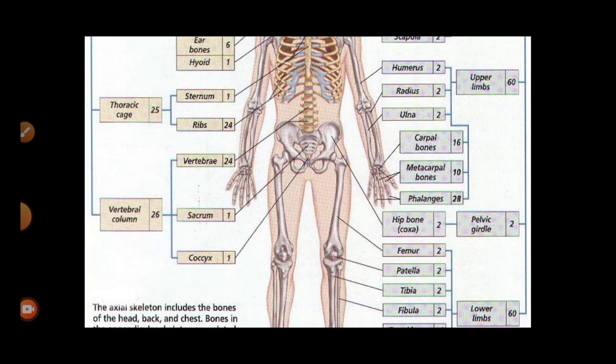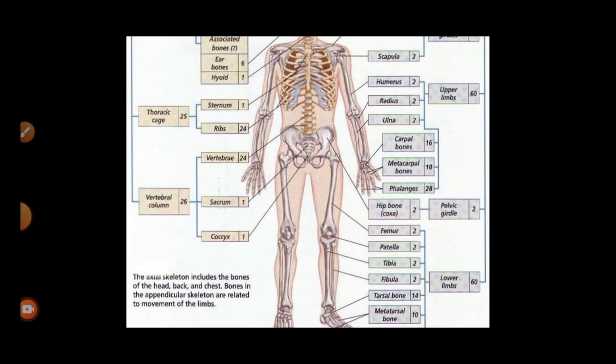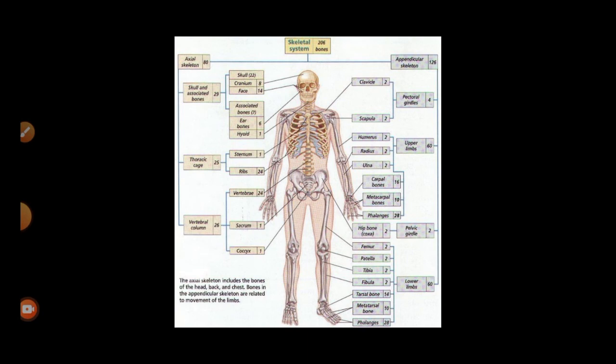The arm bone is called the humerus, then radius and ulna, then carpals, metacarpals, and phalanges. The upper limb consists of 60 bones. The lower limb also consists of 60 bones: femur, patella, tibia, fibula, tarsal, metatarsal, and phalanges. Hip bones are two in number. The hip bone is also called the innominate bone and also the pelvic girdle. A girdle plus a limb forms an extremity.